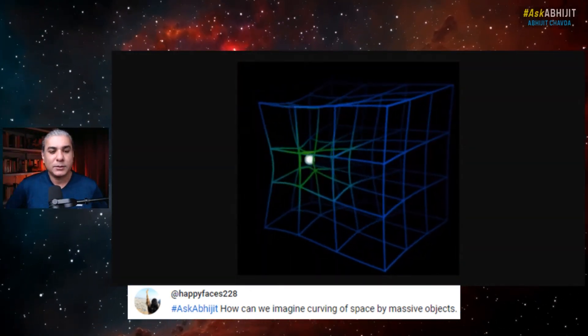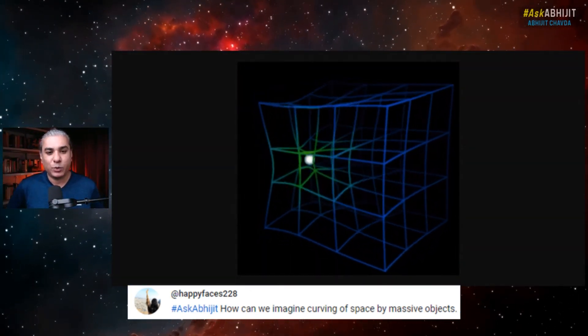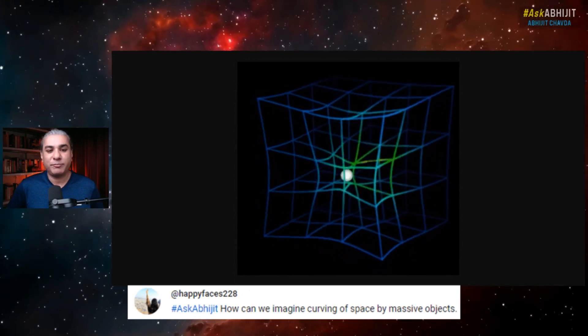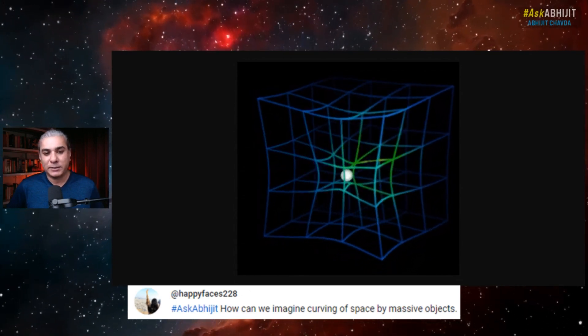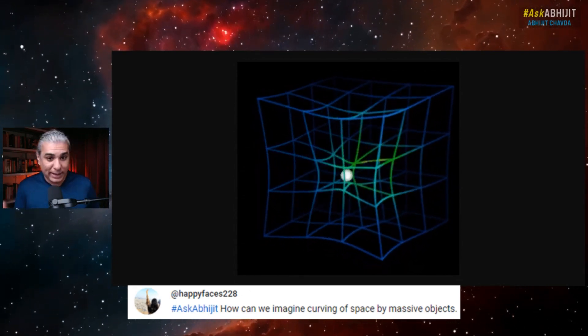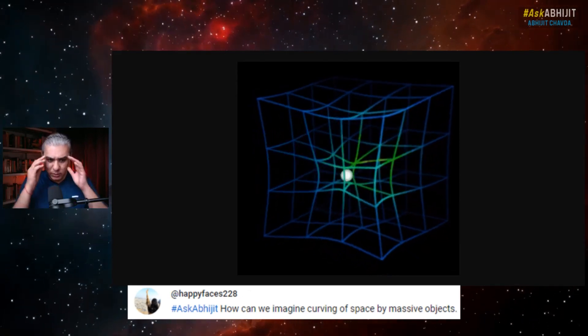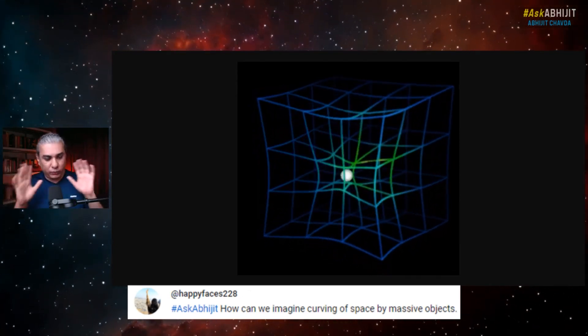Check it out. This is a more three-dimensional view of how the presence of matter curves spacetime. We're actually seeing this in three dimensions, not four dimensions, because the human brain is not capable of visualizing a four-dimensional universe.